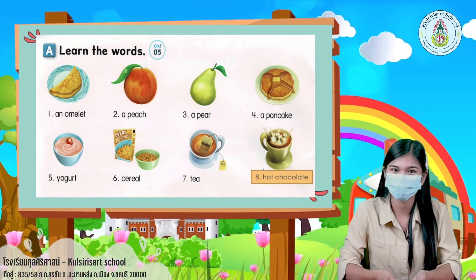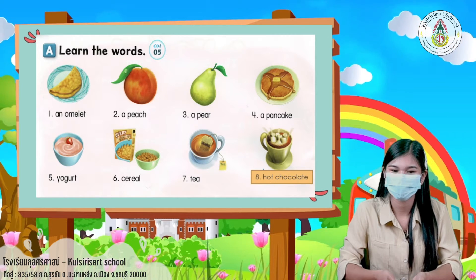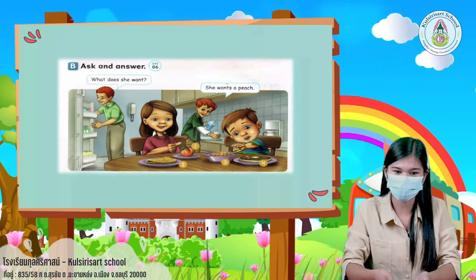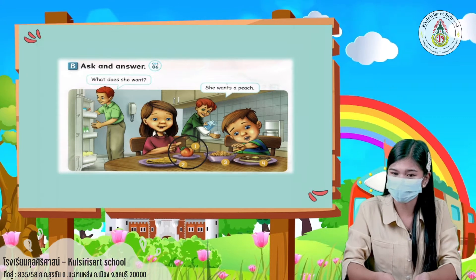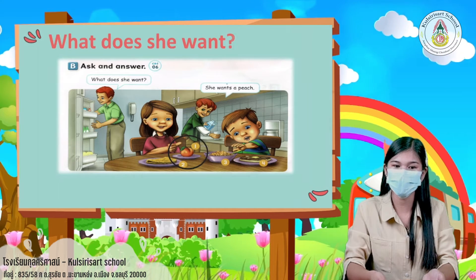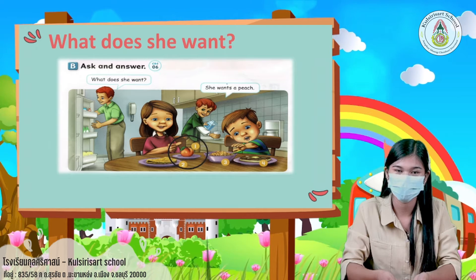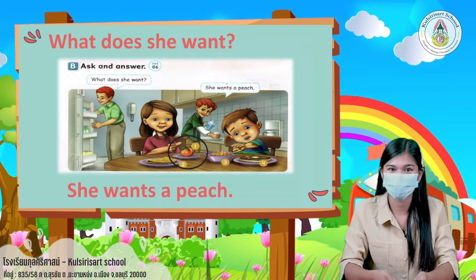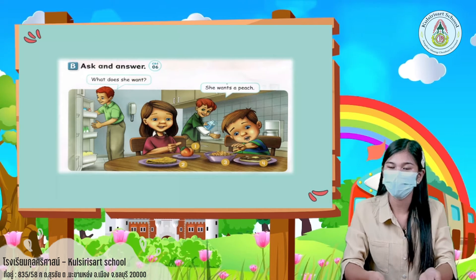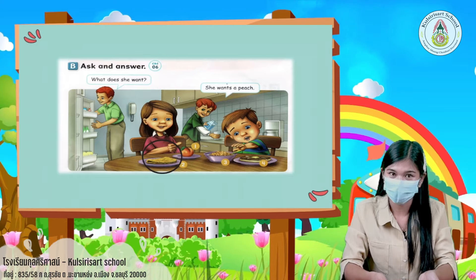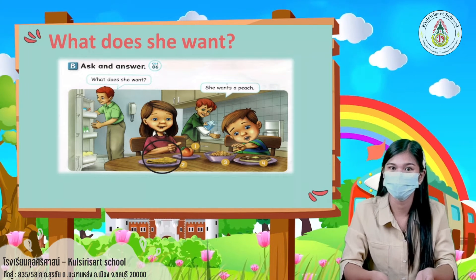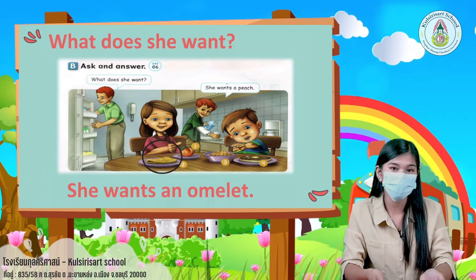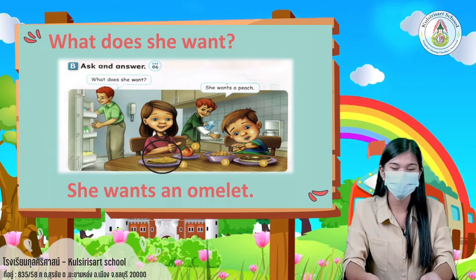Hot chocolate. Okay, good job kids! Next, let's take a look at the picture. Look at picture number one and say with teacher. What does she want? She wants a peach. Next, look at picture number two. What does she want? She wants an omelet.